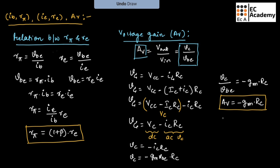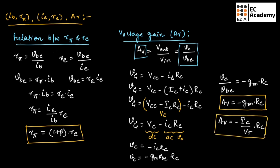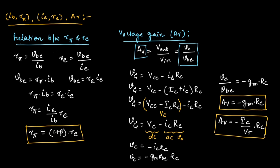So we can write Av equals minus Ic divided by Vt into Rc, where in place of Gm we have written Ic divided by Vt. These are the expressions for voltage gain. This covers base current and input resistance, emitter current and input resistance, the relationship between base resistance and emitter resistance, and voltage gain. Hope you have understood the topic — thank you.